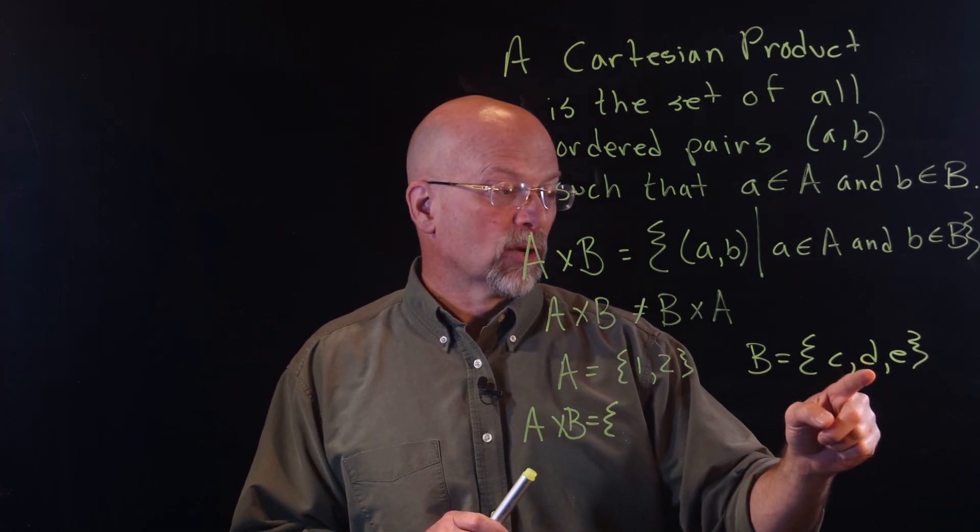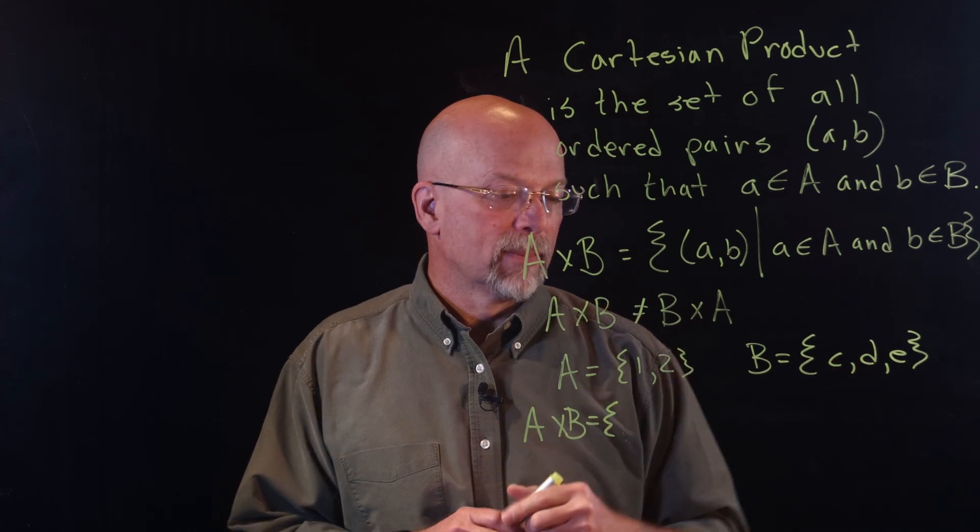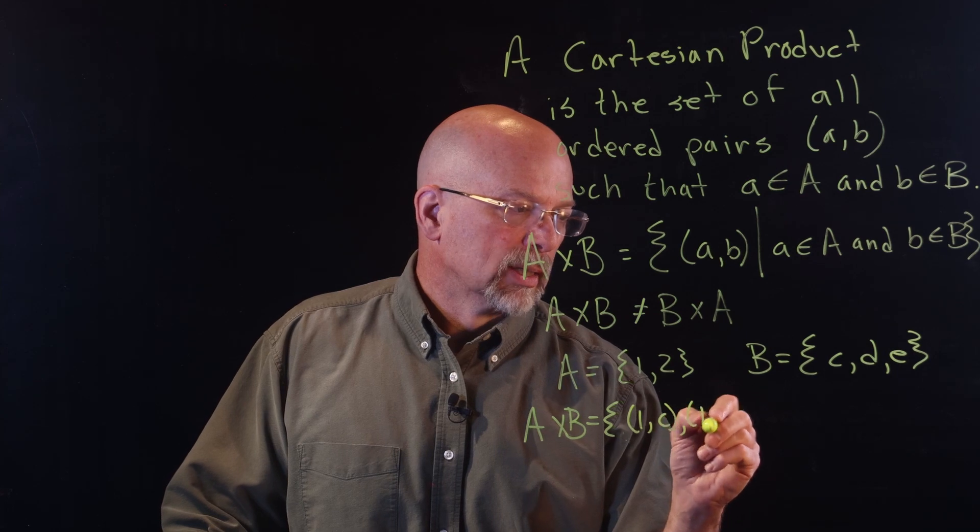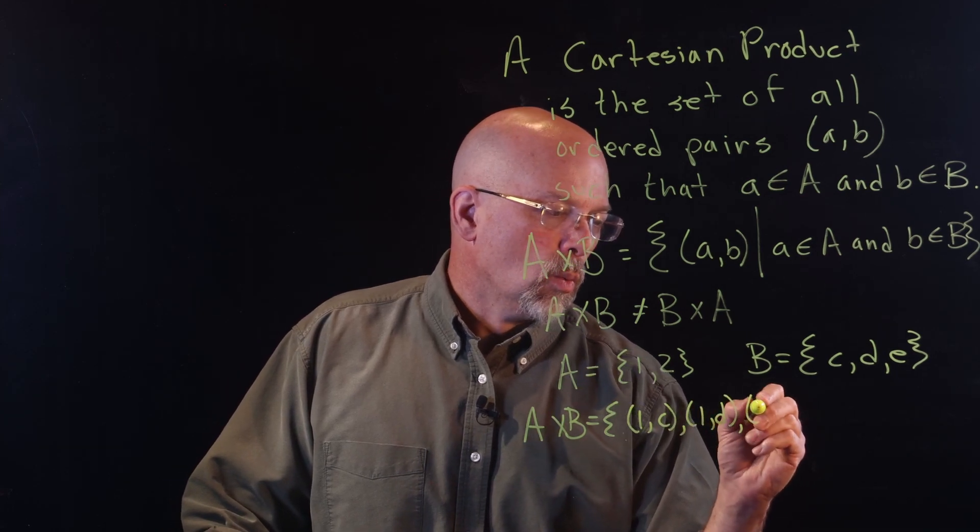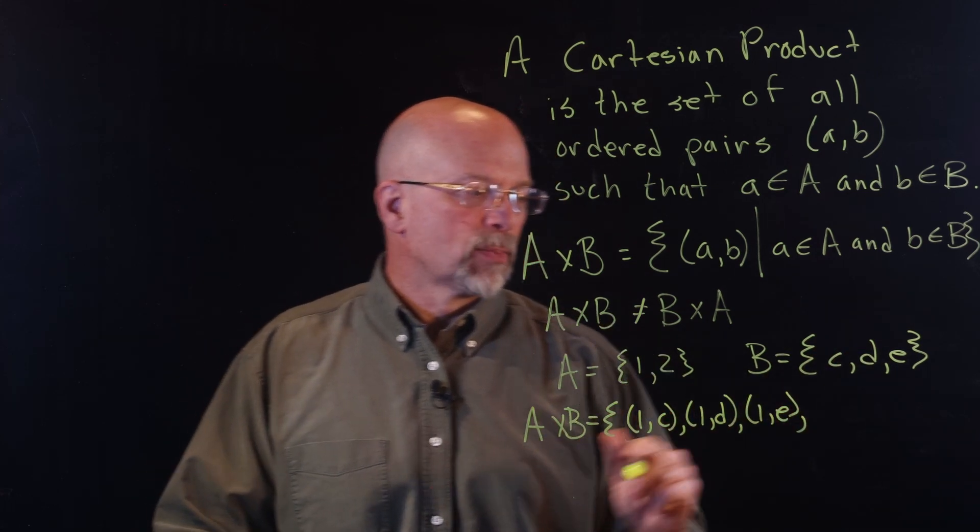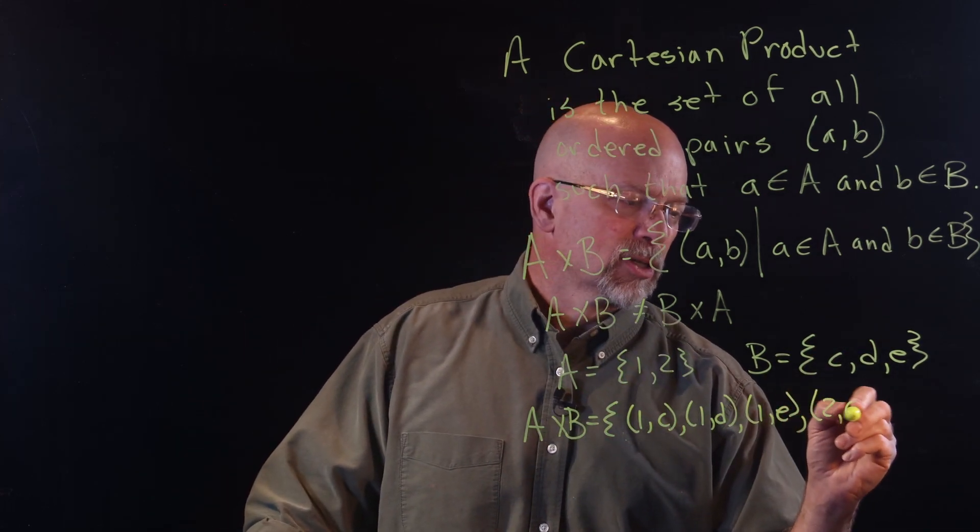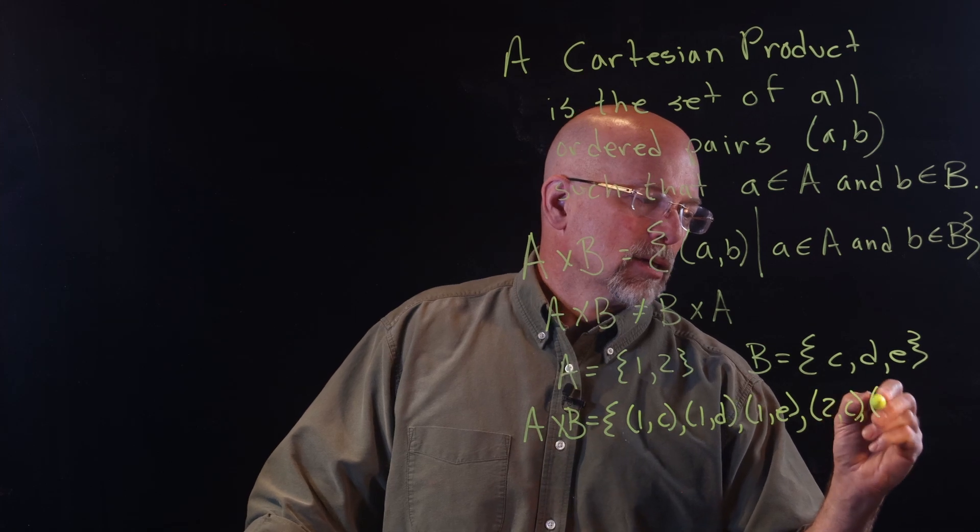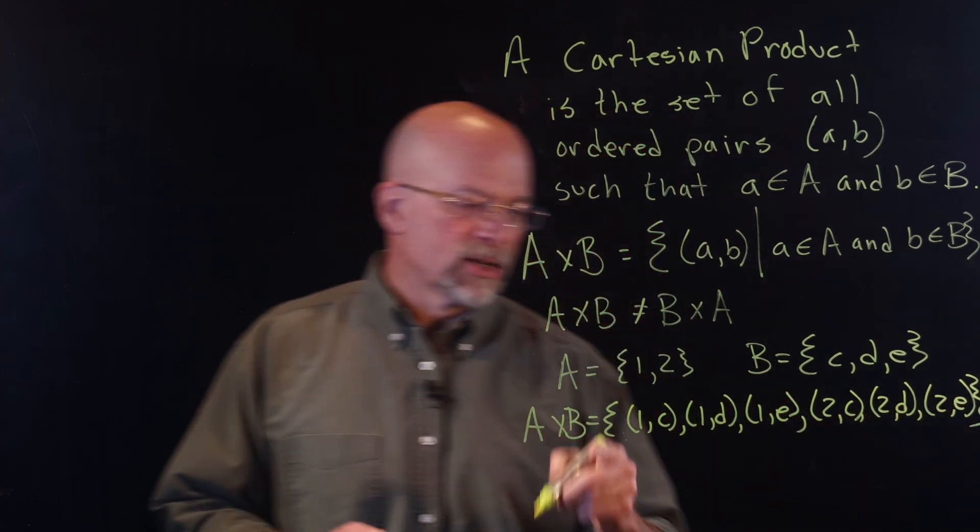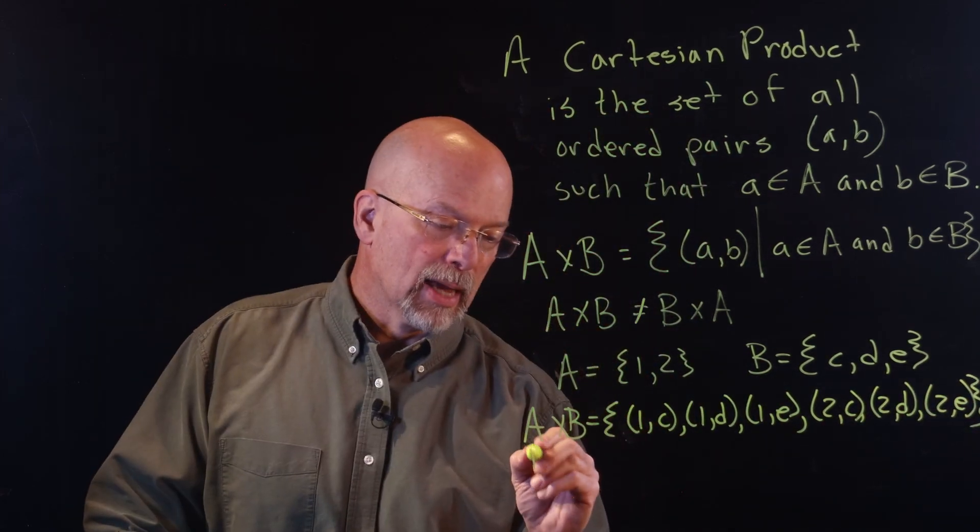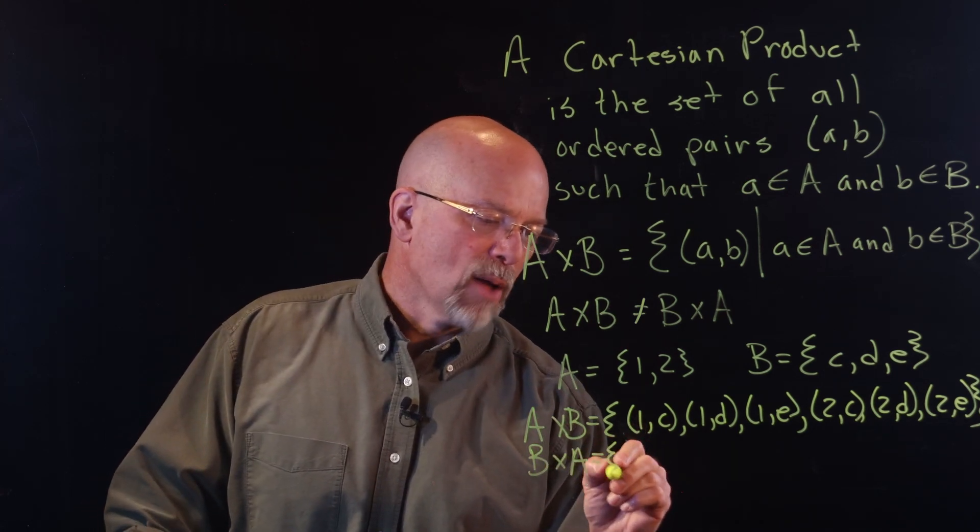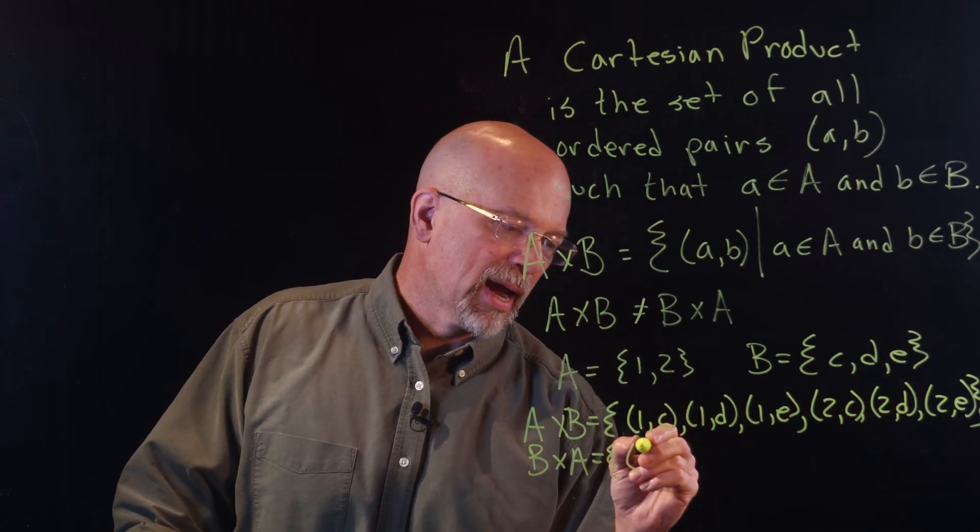So you get (1, C), (1, D), (1, E). Now that we've paired 1 with everything that's in B, now let's pair 2. So you have (2, C), (2, D), and (2, E). And there is our Cartesian product.